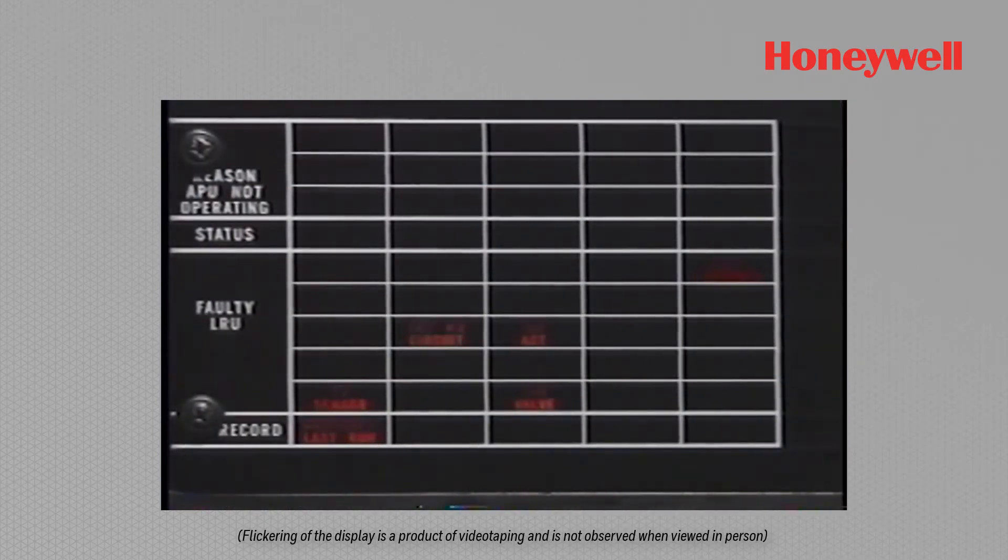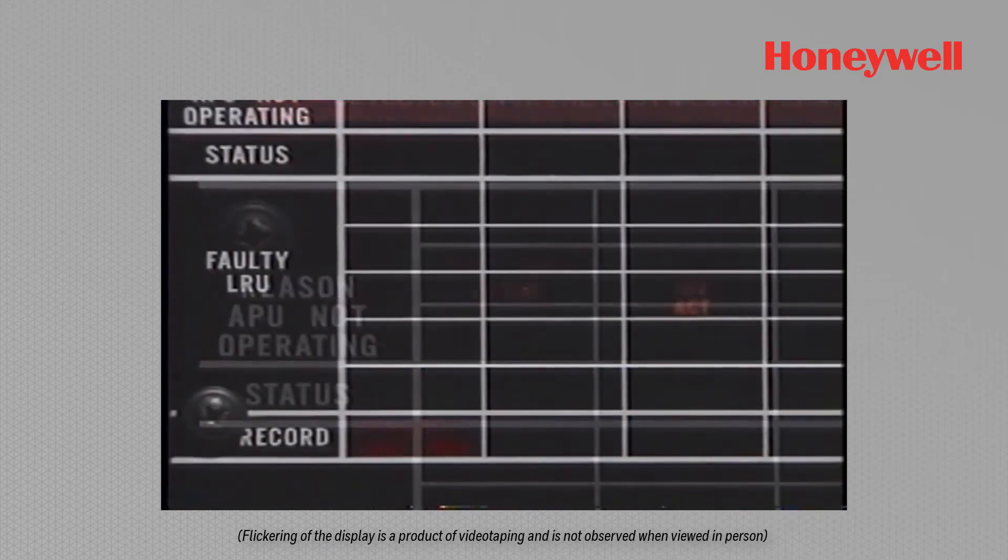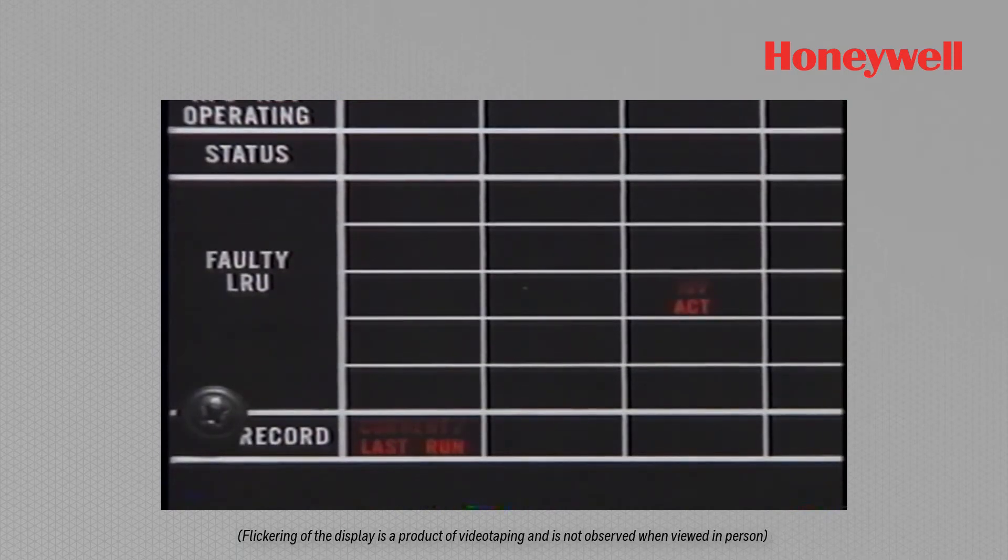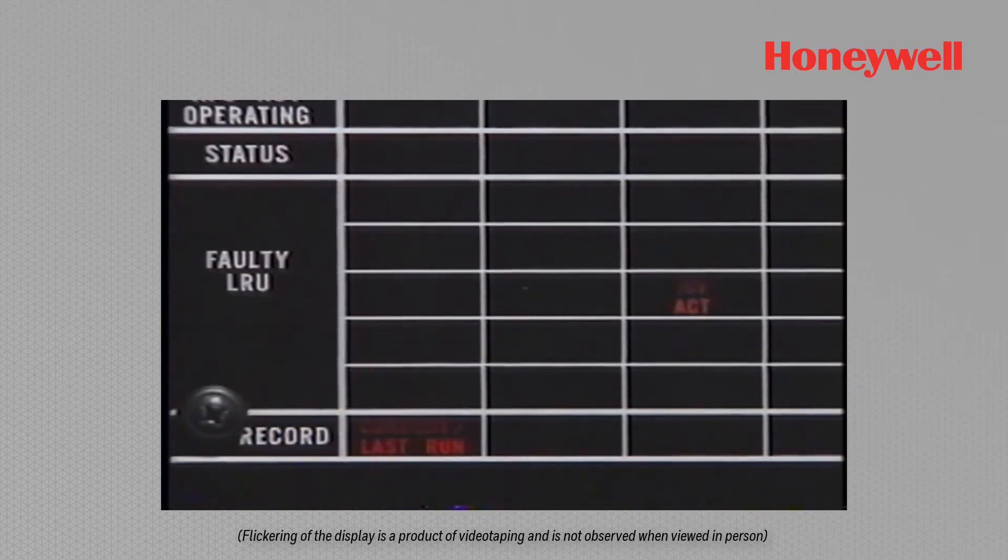If a shutdown occurs, the display will blank. The reason is logged for display in last run, and all faulty LRUs that are not associated with that reason are transferred to the summary position. The faulty LRUs in last run are only those LRUs that could have contributed to that particular shutdown.